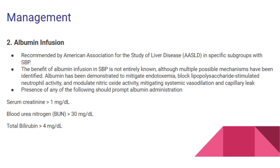Number 2: Albumin infusion. Recommended by the American Association for the Study of Liver Disease (AASLD) in specific subgroups with SBP. The benefit of albumin infusion in SBP is not entirely known, although multiple possible mechanisms have been identified. Albumin has been demonstrated to mitigate endotoxemia, block lipopolysaccharide-stimulated neutrophil activity, and modulate nitric oxide activity, mitigating systemic vasodilation and capillary leak.